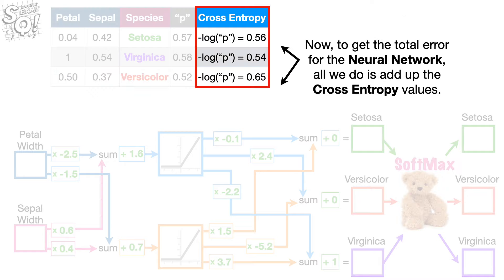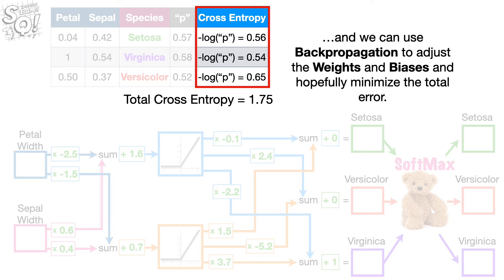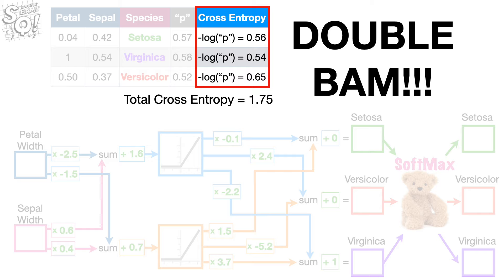Now, to get the total error for the neural network, all we do is add up the cross-entropy values. In this case, we get 1.75 as the total error. And we can use backpropagation to adjust the weights and biases and hopefully minimize the total error. Double bam!